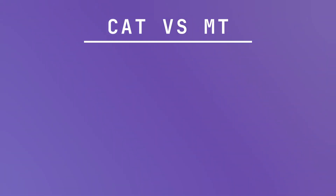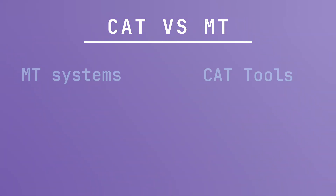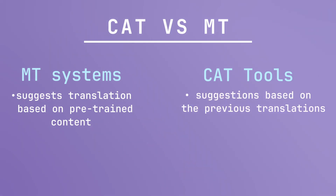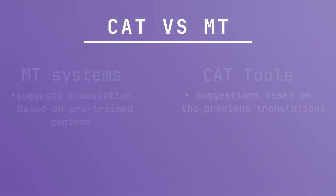Many people, especially students, confuse CAT tools and machine translation systems. The big difference is that machine translation suggests translation based on pre-trained content, while CAT tools give suggestions based on previous translations stored in the translation memory and term bank.